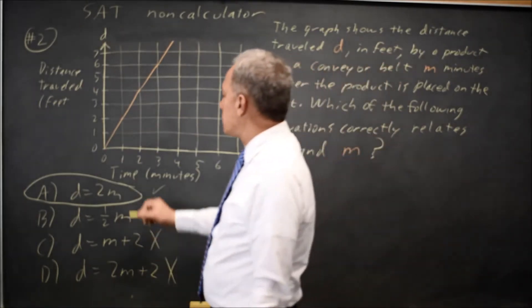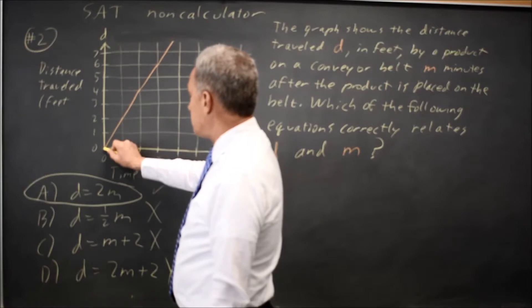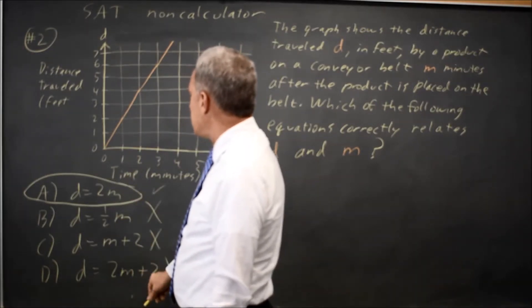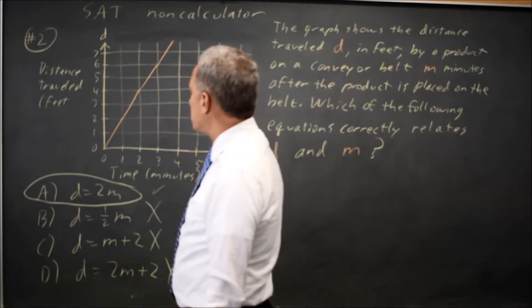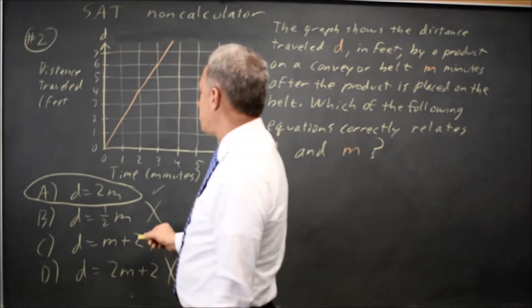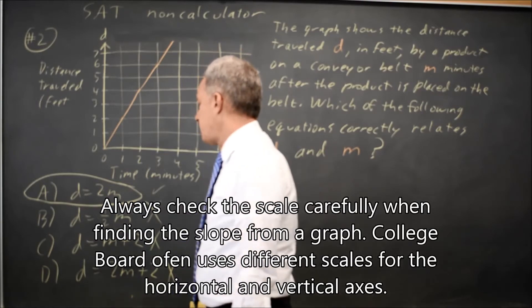Alternatively, I could find the equation because the intercept is 0, which rules out C and D, and the slope we go up 2 when we go right 1. Change in Y over change in X is 2 over 1. Slope is 2, not 1 half.